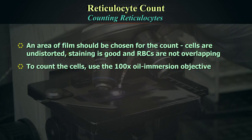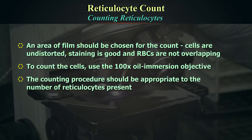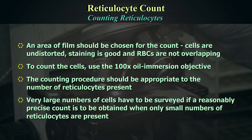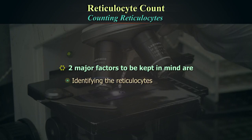Use the 100X oil immersion objective. The counting procedure should be appropriate to the number of reticulocytes present. Very large numbers of cells must be surveyed to obtain a reasonably precise count when only small numbers of reticulocytes are present. Two major factors to keep in mind are identifying the reticulocytes and performing the calculations.